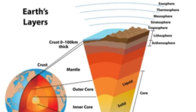The thickness of the Earth's crust varies significantly depending on location, with differences between continental and oceanic crust as well as variations within these categories due to geological processes. On average, the crust is thinner beneath ocean basins compared to continents.